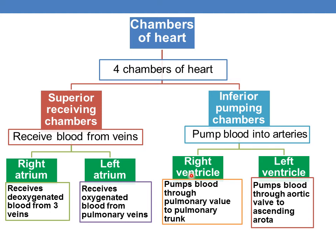Now coming to the pumping chambers: the right ventricle pumps blood through the pulmonary valve to the pulmonary trunk. The major function of the left ventricle is to pump blood through the aortic valve to the ascending aorta. Whereas the right ventricle pumps blood through the pulmonary valve to the pulmonary trunk.